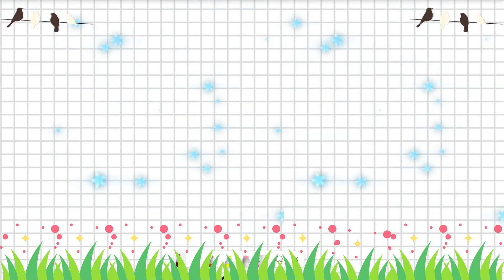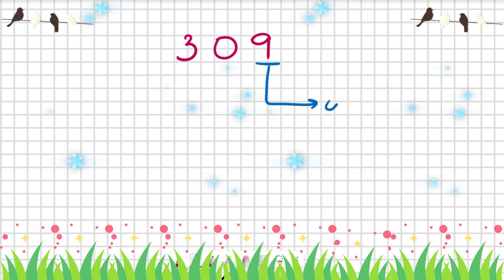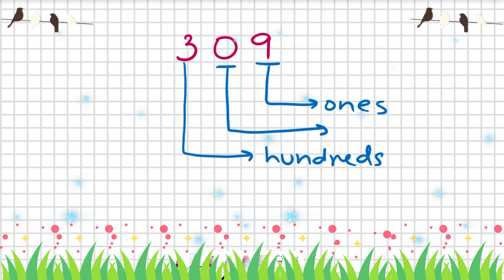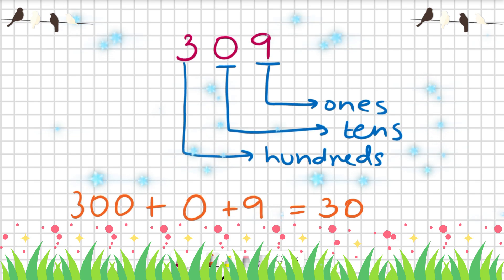What if we have a number like 309? How do we explain it? As we know, this is the ones, and this is the hundreds. But this is zero, and we know that zero means nothing. But because it's in the tens place, it's the tens. But when we write it, how do we write it? This means it's three hundreds plus zero tens plus nine ones, and it equals to 309.